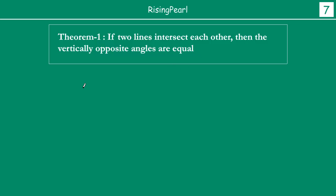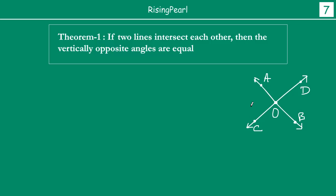So let us draw two lines — line A-B and line C-D — and let us assume that when they intersect, we call that point O. Now if you consider line A-B and think that there is a ray OD standing on A-B, then by the axiom, angle AOD and angle DOB should be equal to 180 degrees, because A-B is a straight line and OD is a ray on A-B.